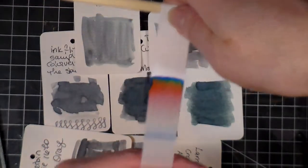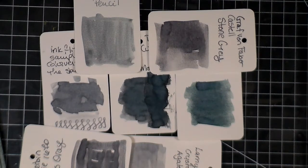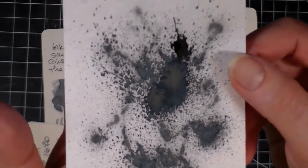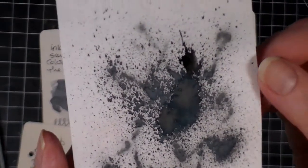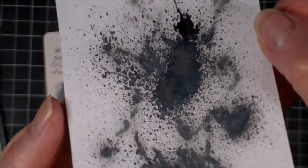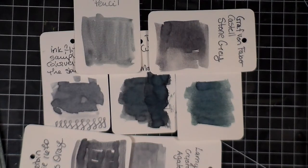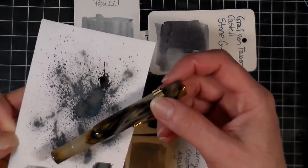So it's a very complex ink clearly, as you can see from the chromatography. Very very interesting. I hope that you found this interesting as well. I love what it did on the Tomoe River paper - look at that, like here the big splotch, it's pretty awesome.